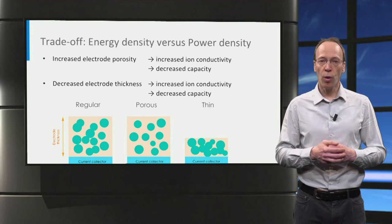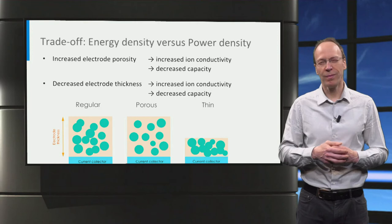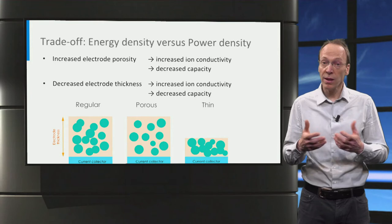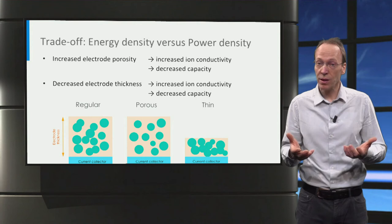A way to improve the lithium-ion transport through the electrolyte that fills the pores of the electrode is to make the electrodes more porous. However, that decreases the amount of electrode material, which lowers the specific capacity of the electrode, and this effectively lowers the energy density of the battery, as the same weight of current collector, separator, and packaging is still required. Another strategy is to make electrodes thinner, but that also results in less electrode material and hence a lower energy density.